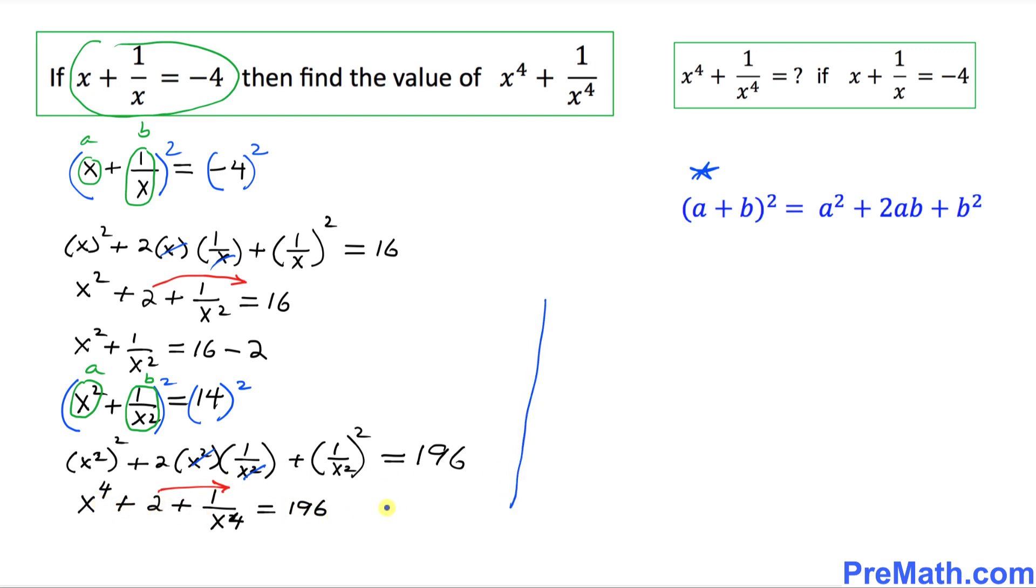Since we don't have enough space over here, I'm going to move this stuff over here. So that is going to give us simply x power 4 plus 1 over x power 4, as you can see this 2 moves on the other side, equal to 196 minus 2. So thus we got simply x power 4 plus 1 over x power 4 equal to 194. So thus our answer turns out to be 194.